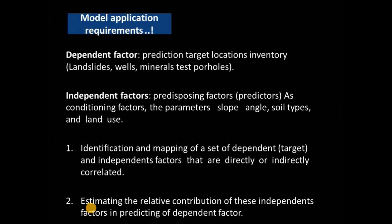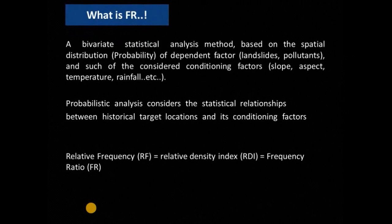The processing starts first with identification and mapping of the set of targets, and also the independent factors that are directly or indirectly correlated with the target, and then finding the contribution and importance of each factor. In this session, we are focusing on frequency ratio. Frequency ratio, in short, is a bivariate statistical analysis method based on spatial probability, considering the statistical relationship between historical target locations and their conditioning factors. Most articles referring to relative frequency or relative density index and frequency ratio all follow a similar procedure.